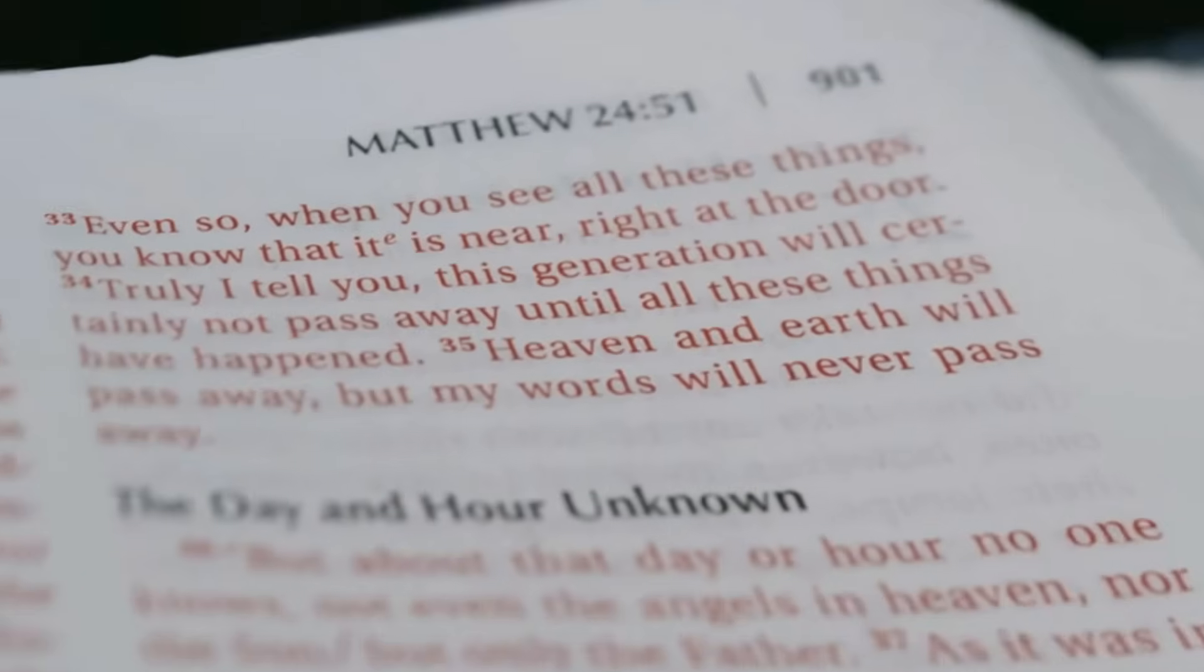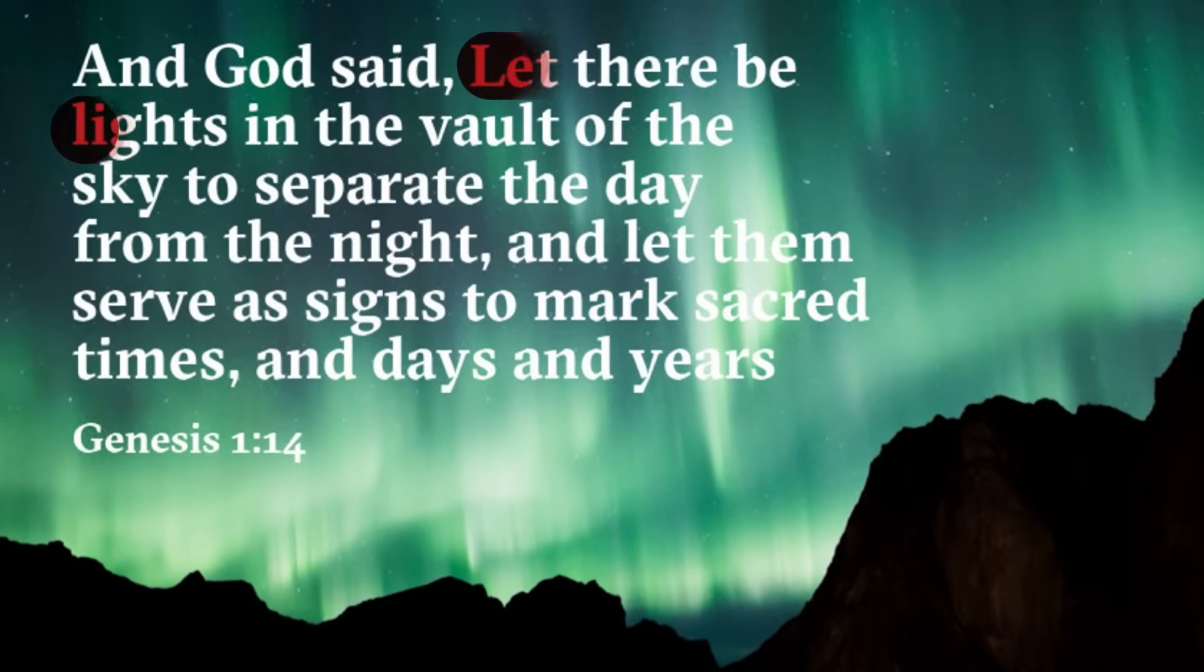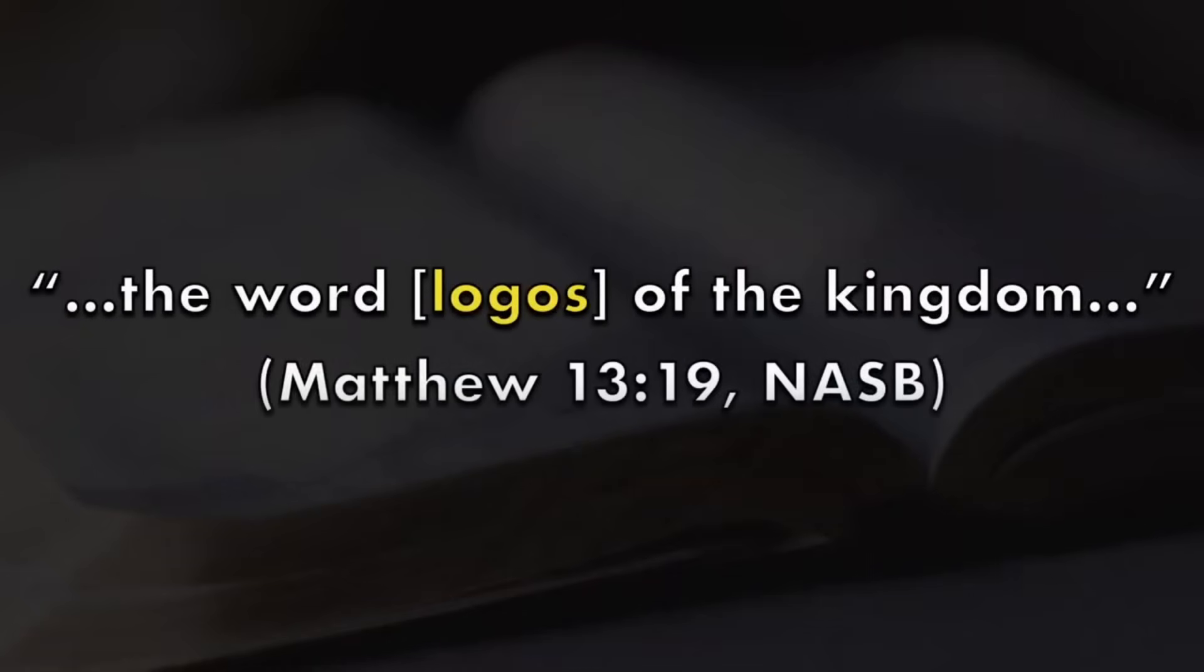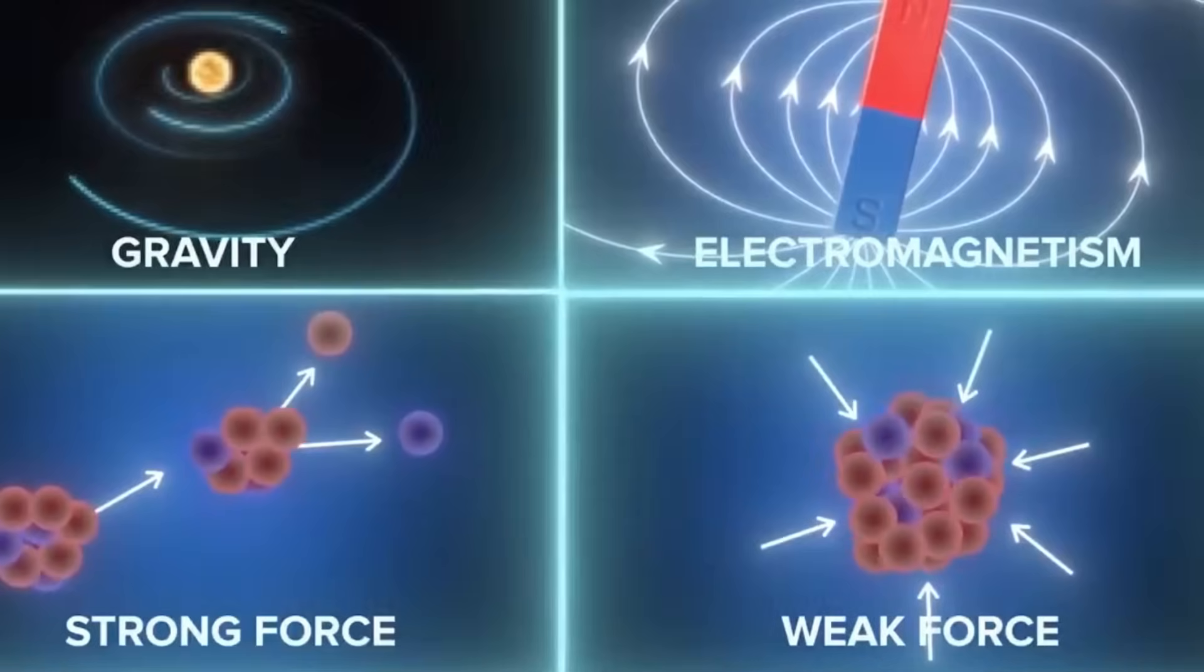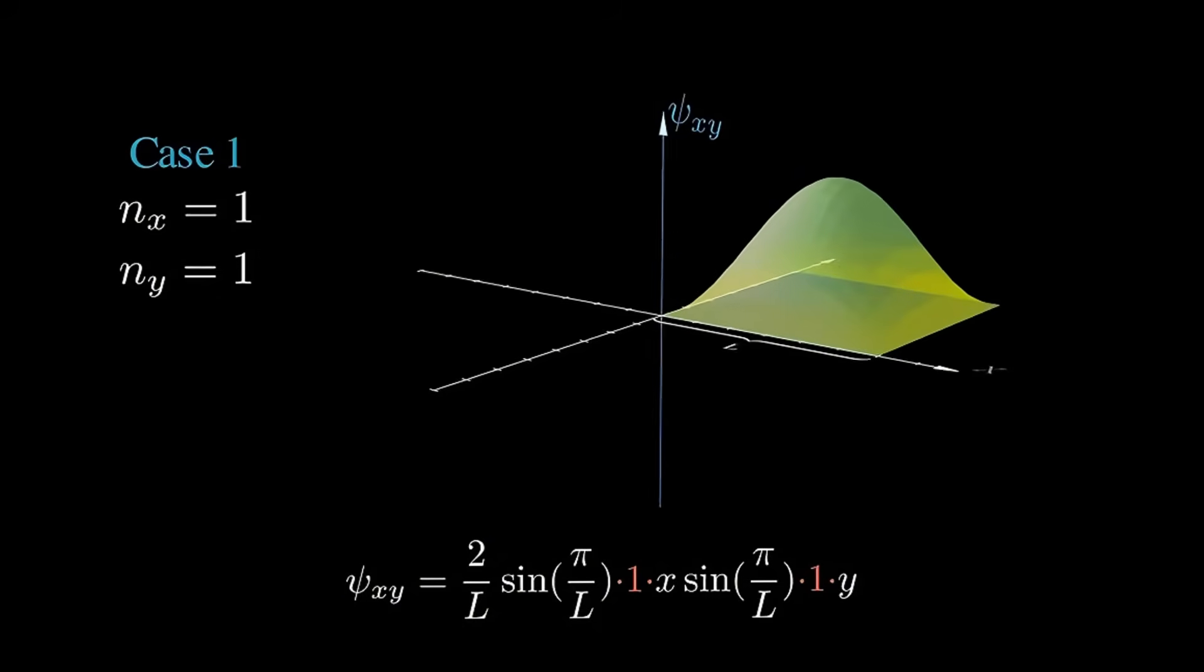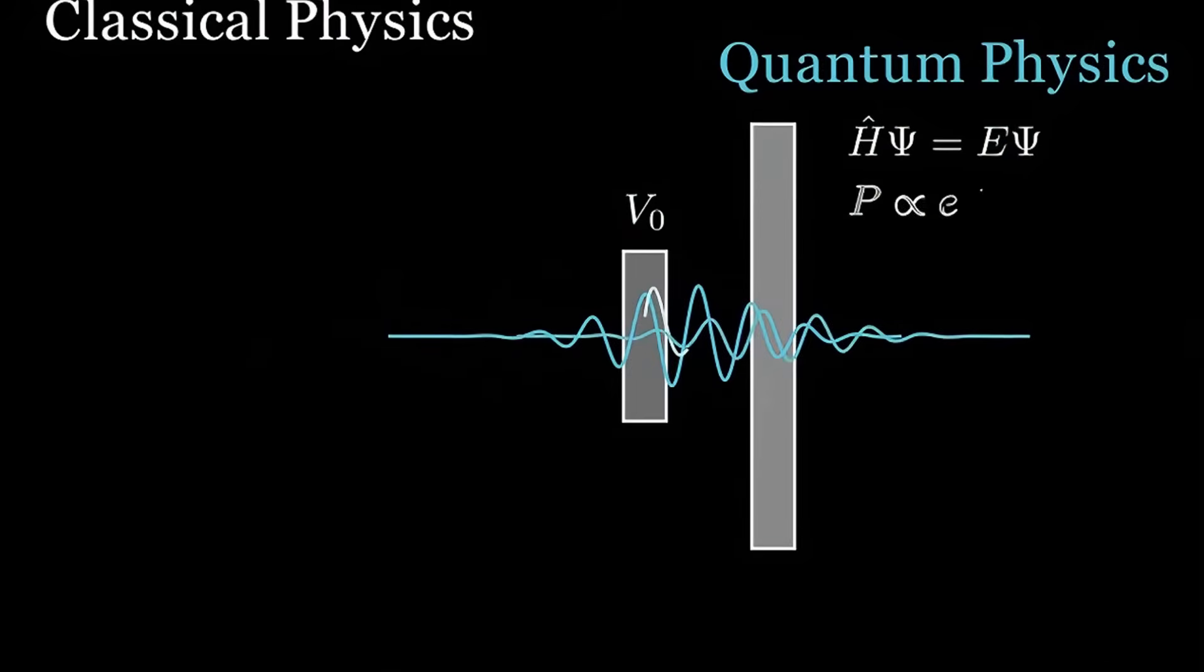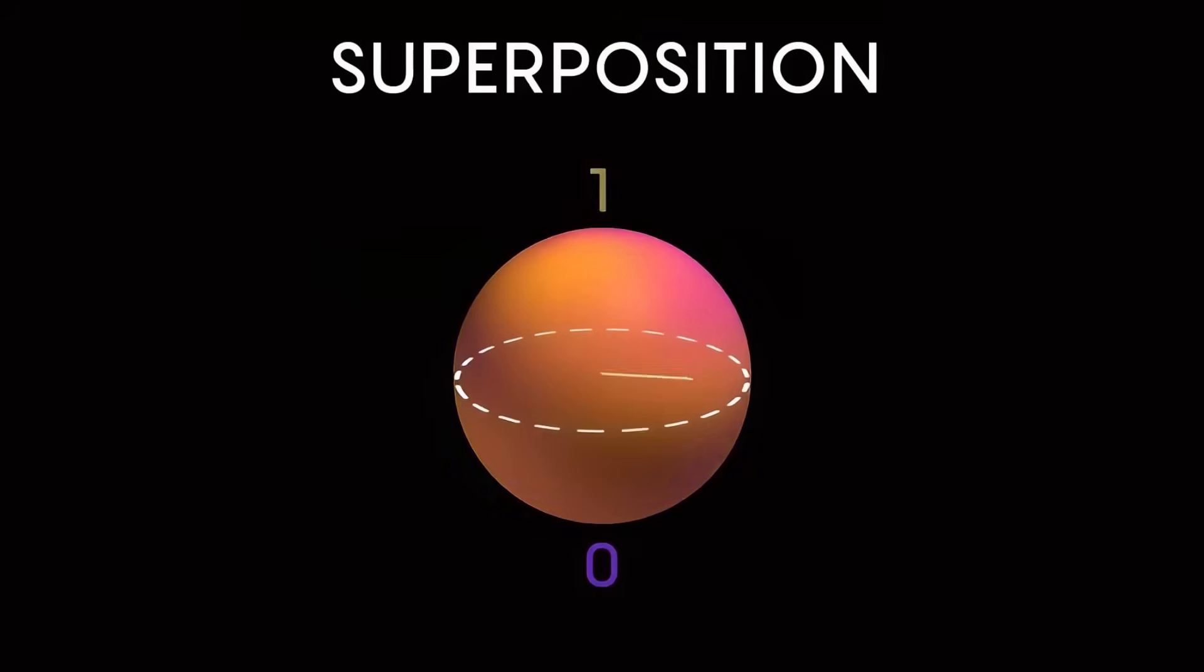Quantum tunneling—particles passing through barriers they shouldn't classically overcome—reads like a scientific analog for biblical miracles. Just as an electron can emerge on the other side of an energy barrier, Moses parts the Red Sea, Elisha heals Naaman's leprosy. Tunneling reminds us that the improbable is woven into the fabric of reality. When scripture describes events that defy everyday physics, it may be pointing to quantum pathways that allow the miraculous to occur without breaking the cosmic code.